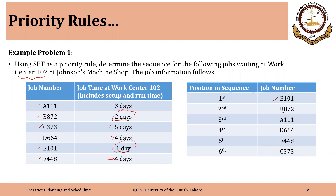The benefit of the shortest processing time rule is that the average flow time — the lead time for all jobs being processed — reduces. We get rid of jobs that require less time first. However, the other side is that jobs requiring long processing time have to wait more. They have a lot of processing time and also a lot of waiting time. Although the average lead time reduces overall, it increases specifically for jobs requiring longer processing time.